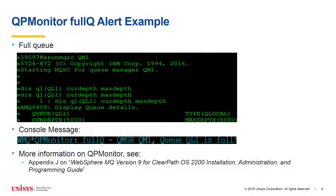This example shows the QP Monitor's Full Q alert. It calls the RUNMQSC to verify the maximum depth (MAXDEPTH) and current depth (CURDEPTH) for the queue. It shows that QL1 is full since it contains 5,000 messages, which is the maximum allowed. The console message 'Full Q' with the name of the queue manager and queue appears on the OS 2200 console.